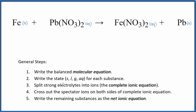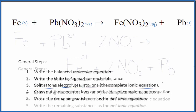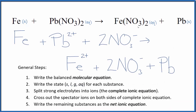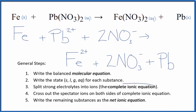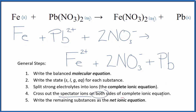Now that we have the states, we can split the strong electrolytes into their ions for the complete ionic equation. This is the complete ionic equation. Now we can cross out those spectator ions that are on both sides of the complete ionic equation.